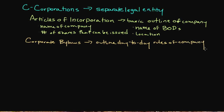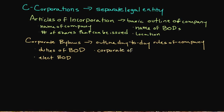Some of the specific things included in corporate bylaws would be the specific duties of each member of the board of directors, how you go about electing board of directors and what process you use, how corporate officers are appointed, how meetings are conducted, and in what situations you can actually amend the corporate bylaws — meaning change the rules you've already established. So they're much more specific, really looking at the day-to-day operations and guidelines that help you run the company.